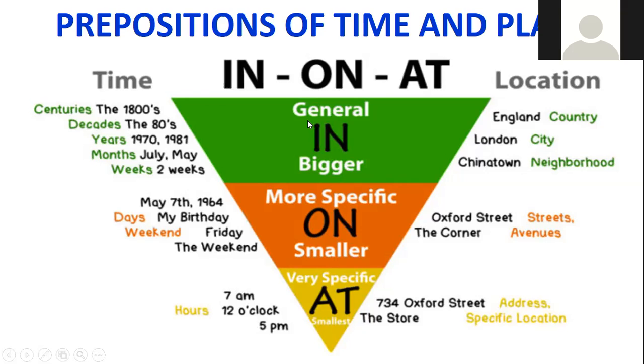I use on for more specific time, more specific locations or smaller locations. For example, May 7th, 1964. On May 7th, 1964. I was born on May 7th, 1964. For days. On my birthday, I'm going to celebrate with my family. For weekend. I will visit you on Friday. I will visit you on the weekend. And I can use it for street. It is located on Oxford Street. It is located at the corner.